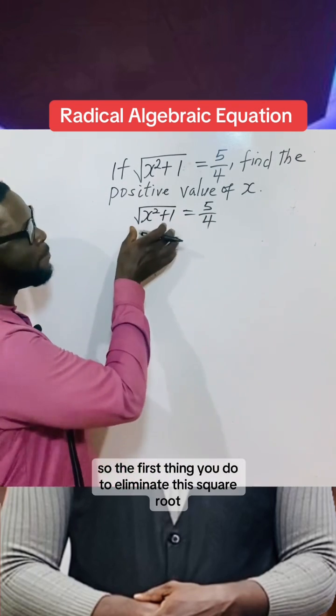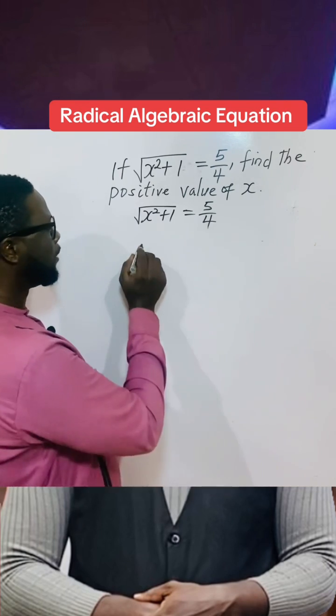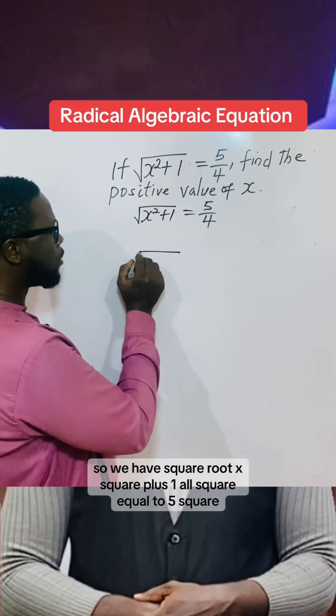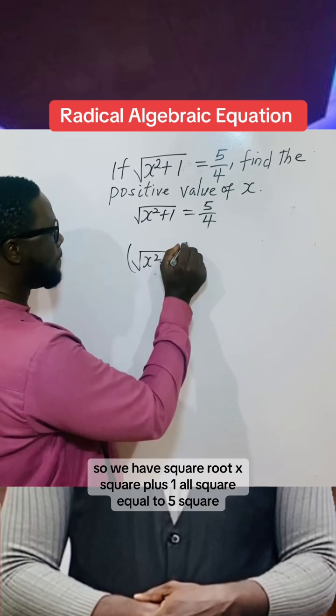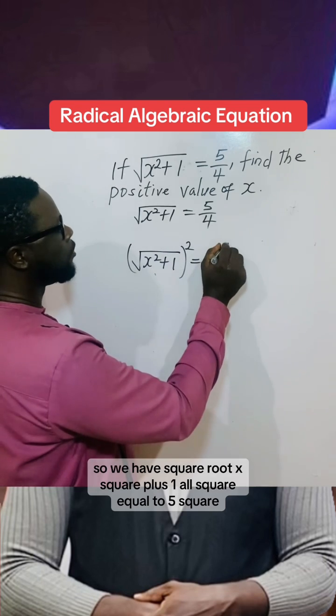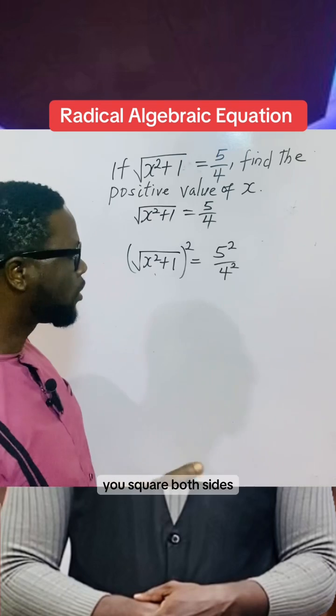The first thing you do to eliminate the square root is take the square of both sides. So we have (√(x² + 1))² = (5/4)². You square both sides.